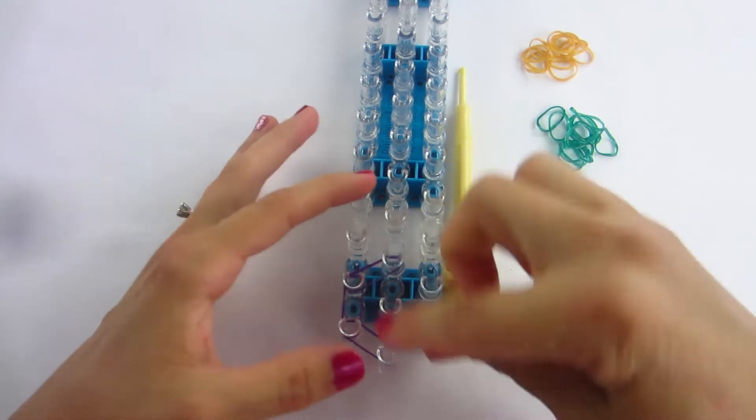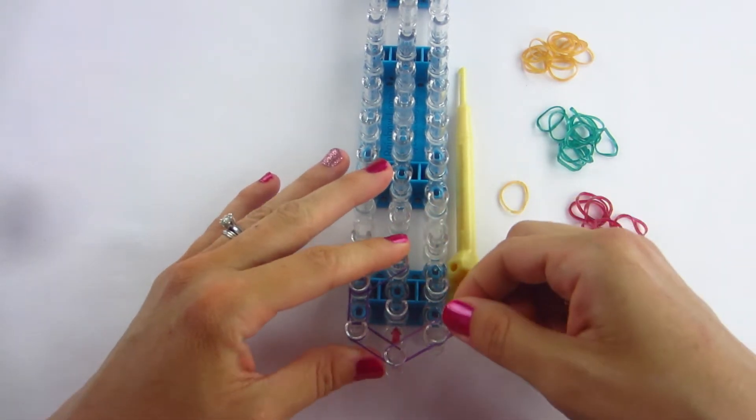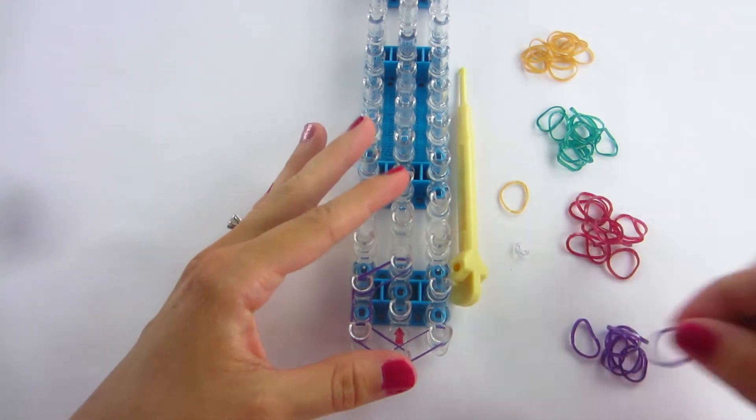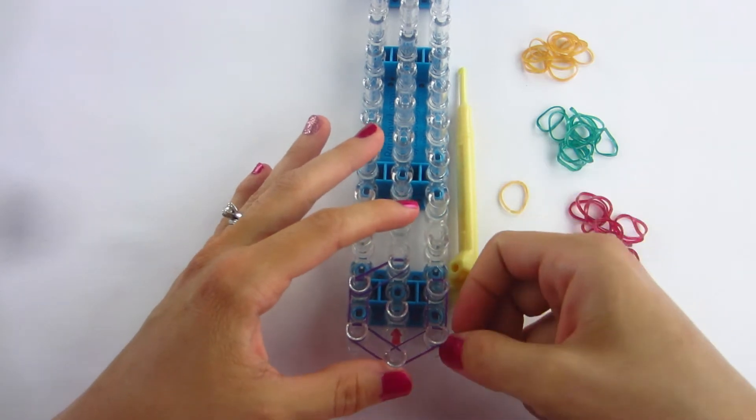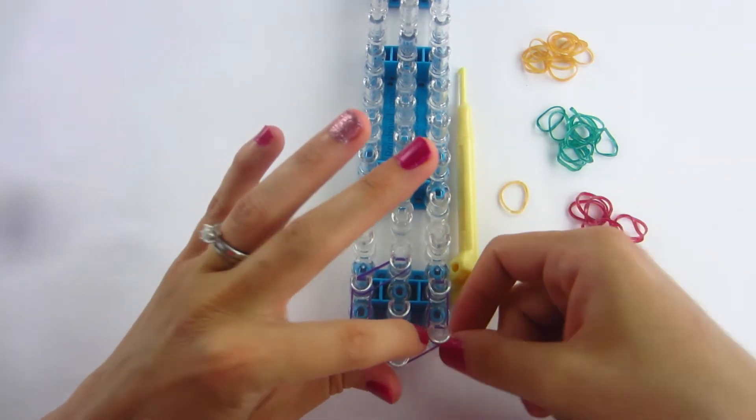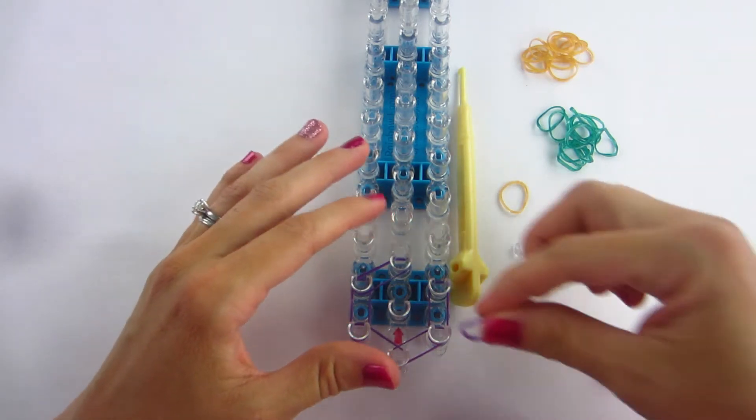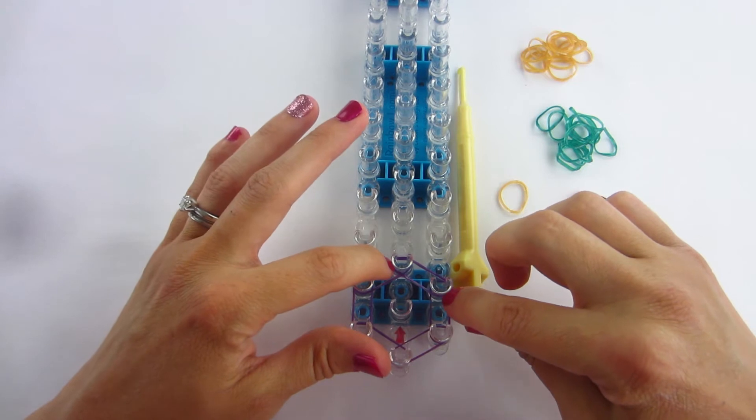And then we're going to start all the way down at the bottom again. Go in the bottom middle up to the right, straight up from there. I'm pushing all these bands down because when it comes to looping it's a little bit easier if they're neat and in order. And then one less to finish that up.